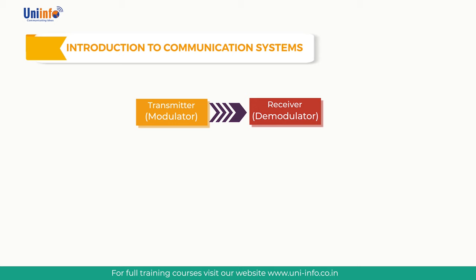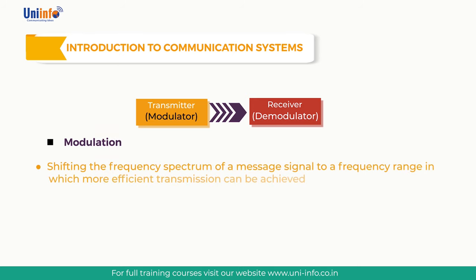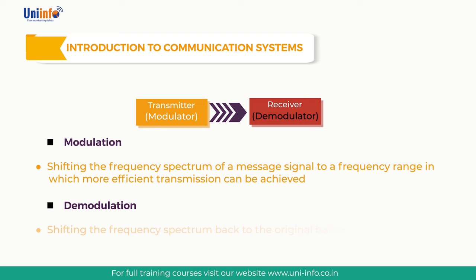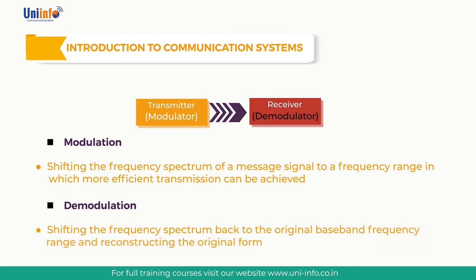Modulation is the process of shifting the frequency spectrum of a message signal to a frequency range in which more efficient transmission can be achieved. Demodulation is the process of shifting the frequency spectrum back to the original baseband frequency range and reconstructing the original signal form if necessary. This was all about the introduction to communication systems.